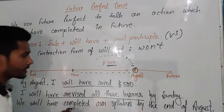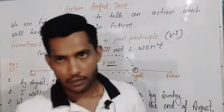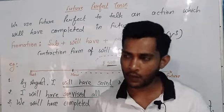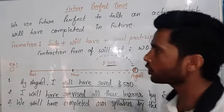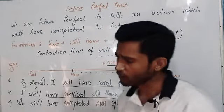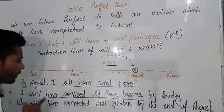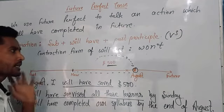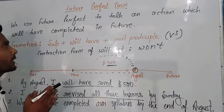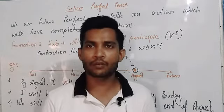In the last sentence: 'We will have completed our syllabus by the end of August.' Imagine we have done more than half of the syllabus and only a few chapters or topics are left in grammar, but by the end of August we will have completed our syllabus. This tense shows the completion of an action in future time.